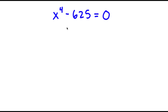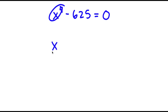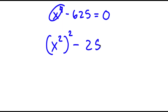In this problem, I have x to the power of 4 minus 625 is equal to 0. To solve this, I'm going to first rewrite x to the power of 4 as x squared to the power of 2, and I'm going to rewrite 625 as 25 squared.